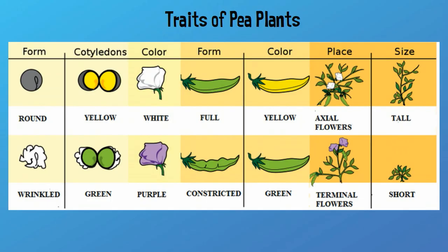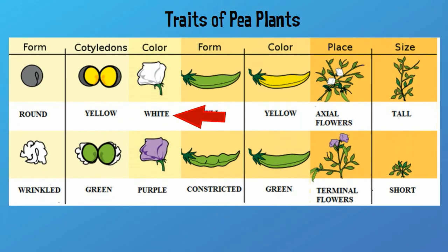Gregor Mendel, who is considered the father of genetics, studied seven traits of pea plants. Notice that for each trait there are different forms. The color of the flower can be white or purple, and the pea plant can be tall or short. For all seven traits, each trait has a different form. These would be examples of alleles — different forms of the same trait.